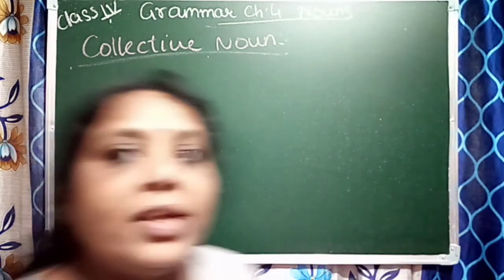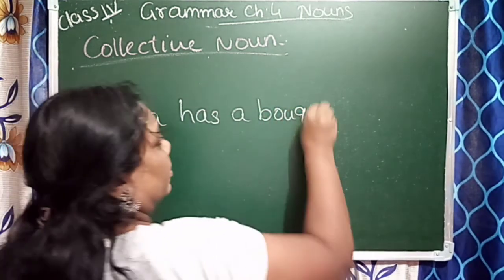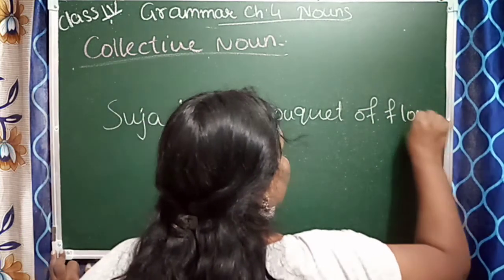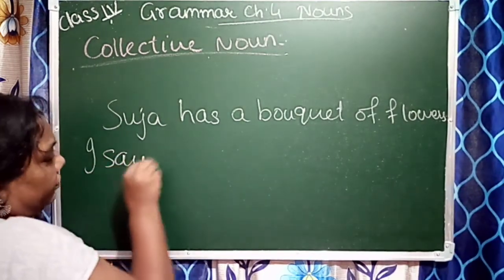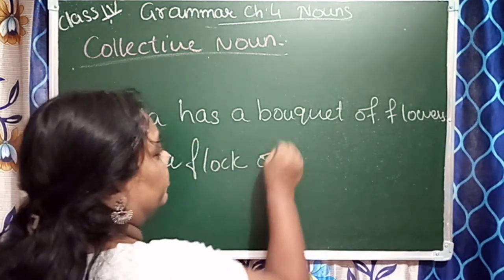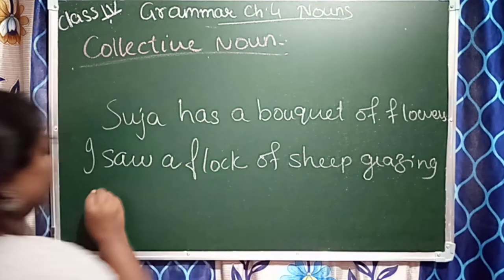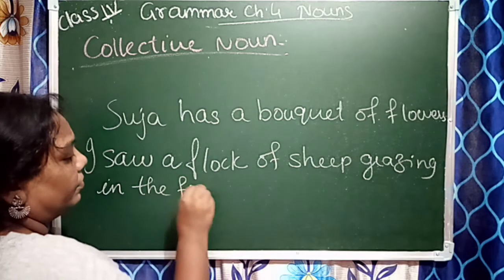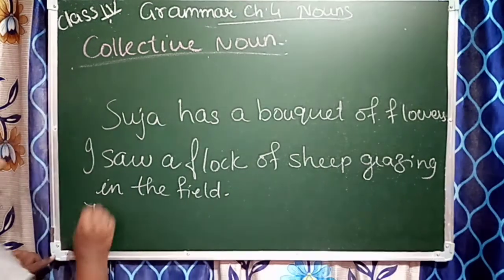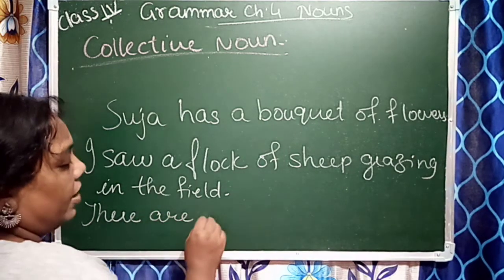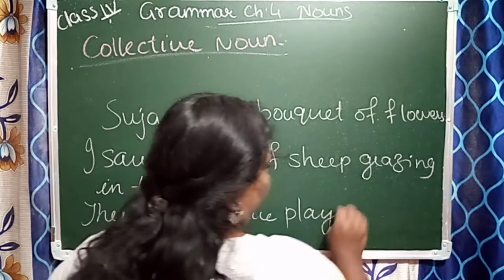So what do you mean by collective noun? If I say: Suja has a bouquet of flowers. Second: I saw a flock of sheep grazing in the field. Third: there are 12 players in a team.